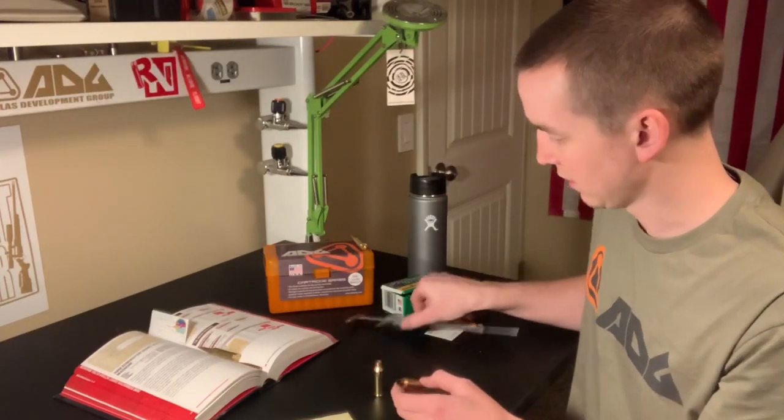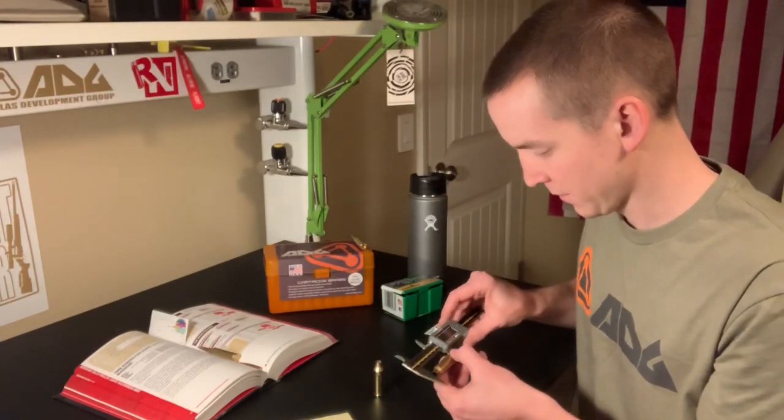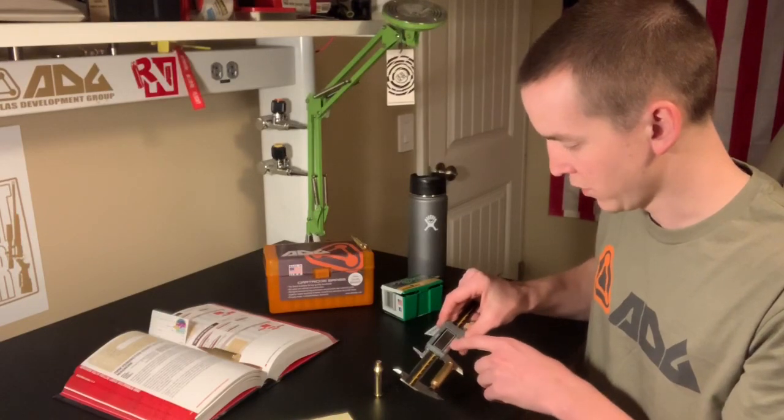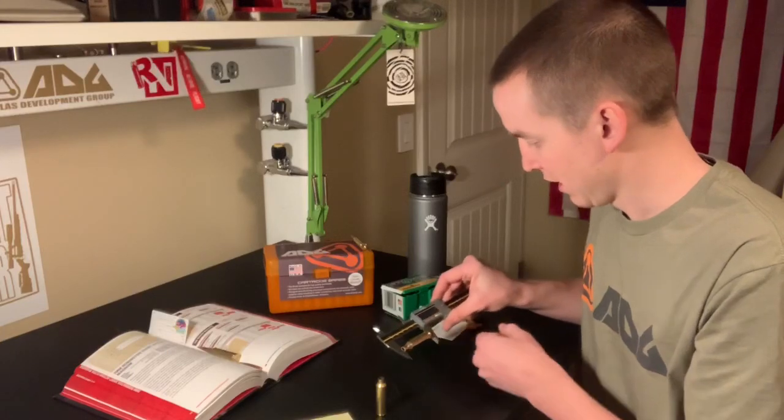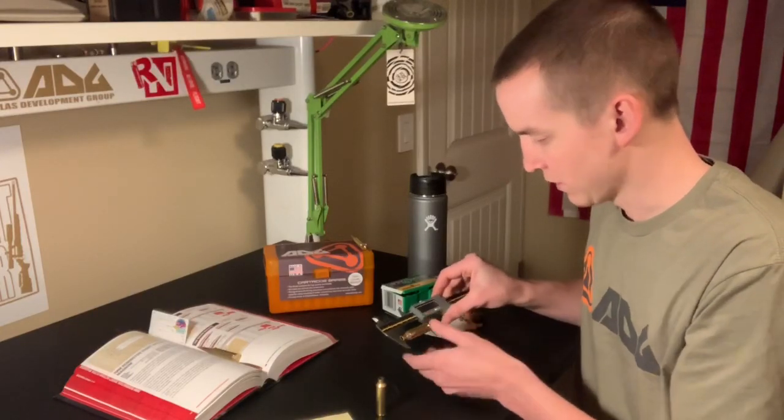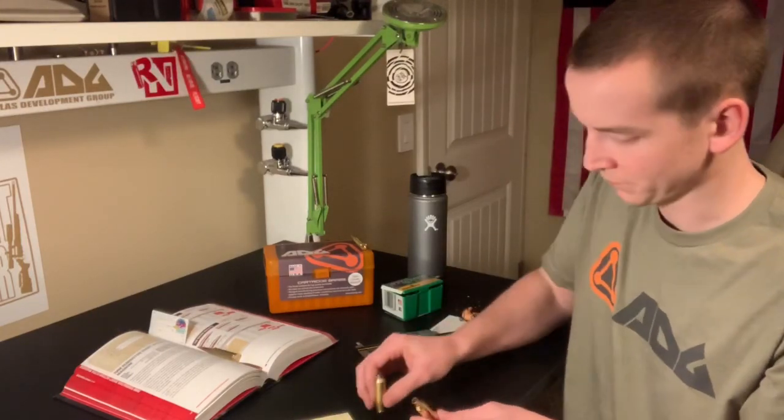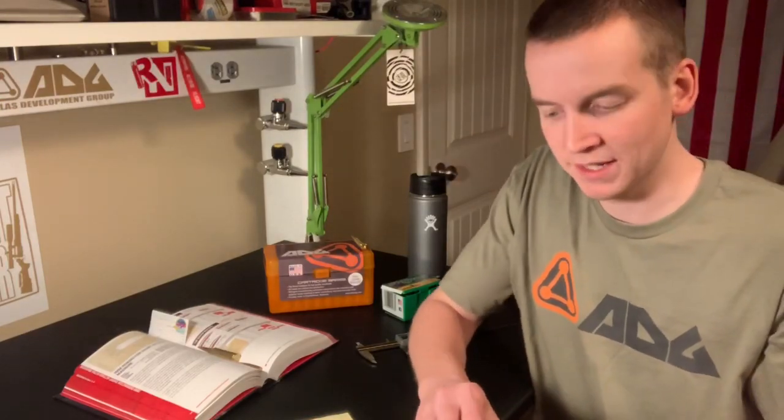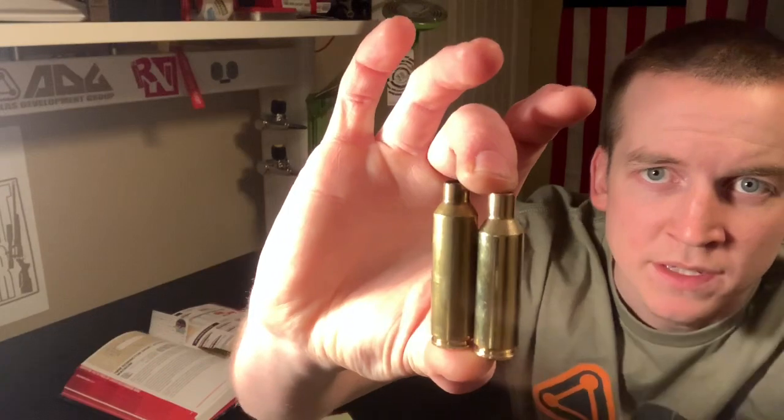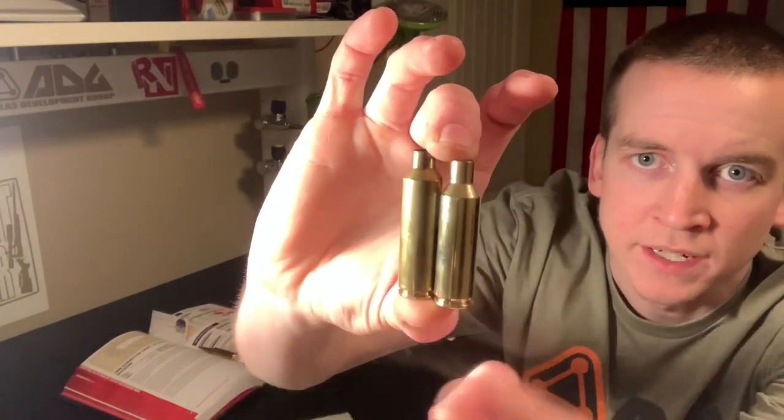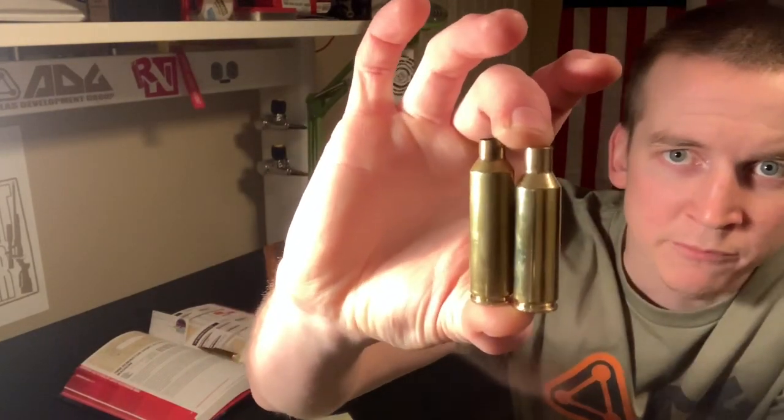So one of them is overall length which we're going to cover. So the WSM is 2.09, the short action ultra mag is 2.02, so it's quite a bit shorter even though they're both short mags. So as we look at this brass, the WSM is this guy over here and the short action ultra mag is this guy over here.